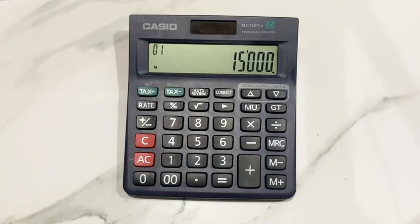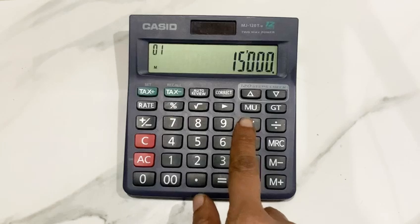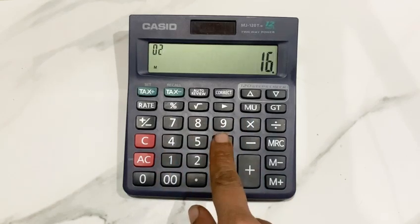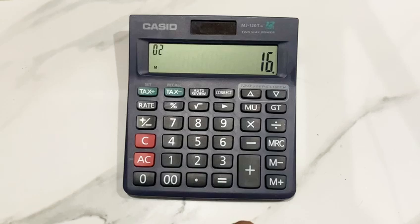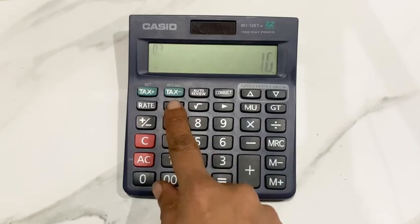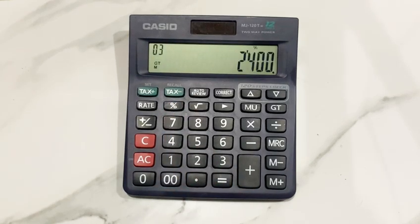So in the first step, we will multiply it with 16. In the next step, we will press the percentage button. After that, we will press the minus sign and at the end, we will press the equal to sign. So here's the final answer.